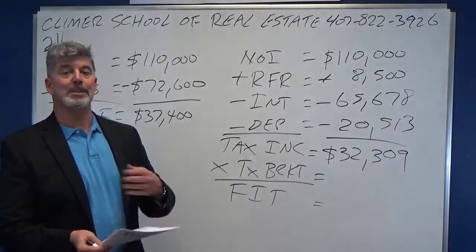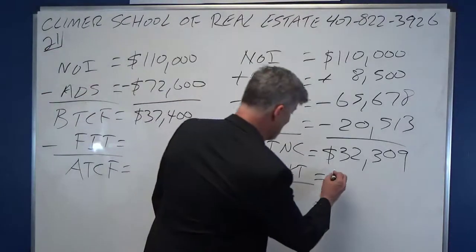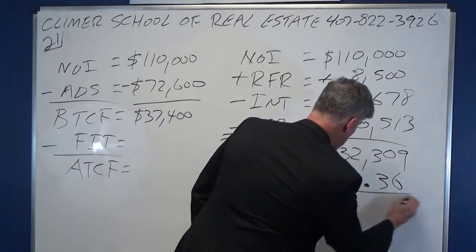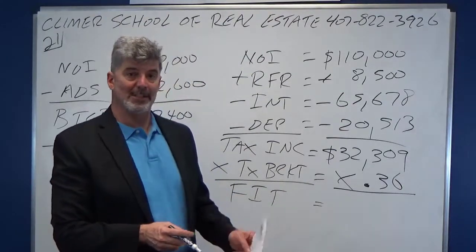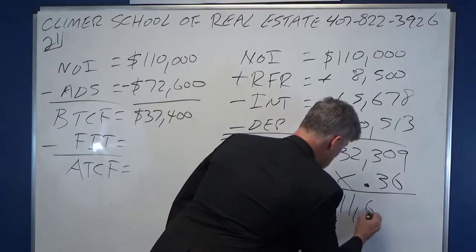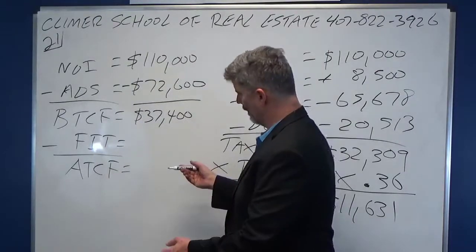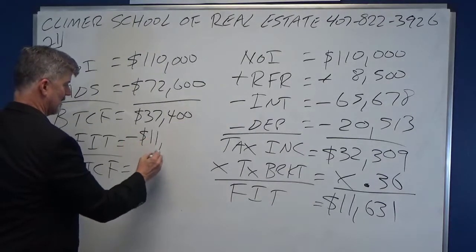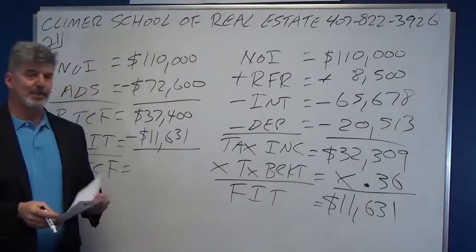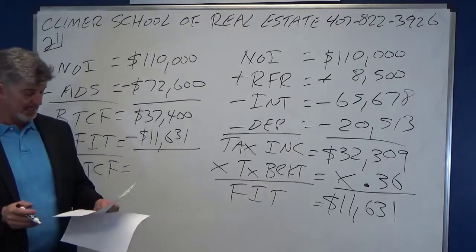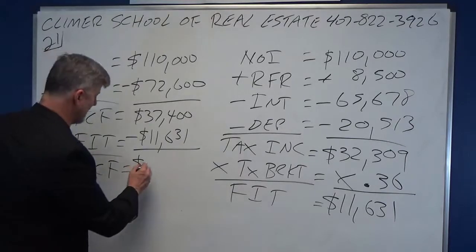That's my taxable income — what your CPA would be looking at. Apparently I am in the 36% tax bracket, so I am going to be paying Uncle Sam $11,631. I take my before-tax cash flow, subtract the income tax I've got to pay Uncle Sam, and that leaves me with an after-tax cash flow of $25,769.